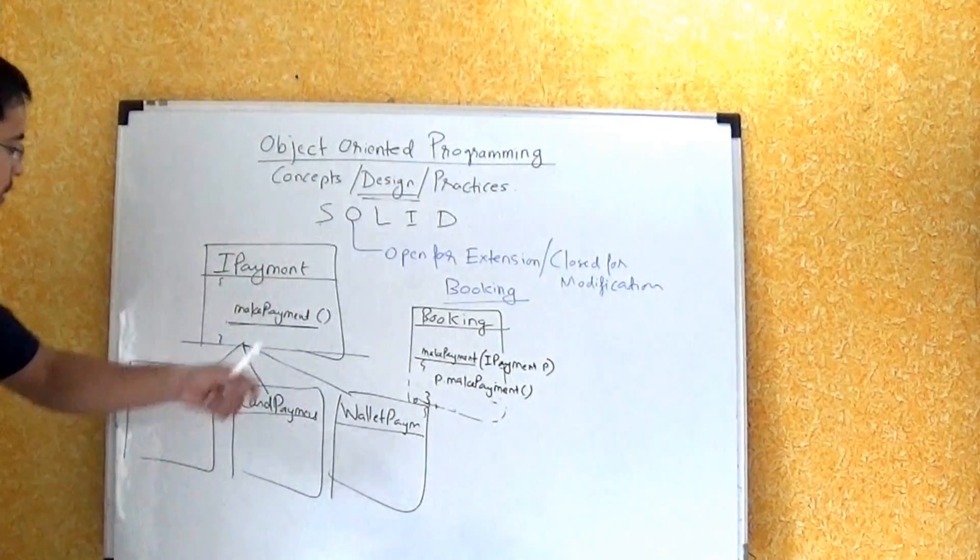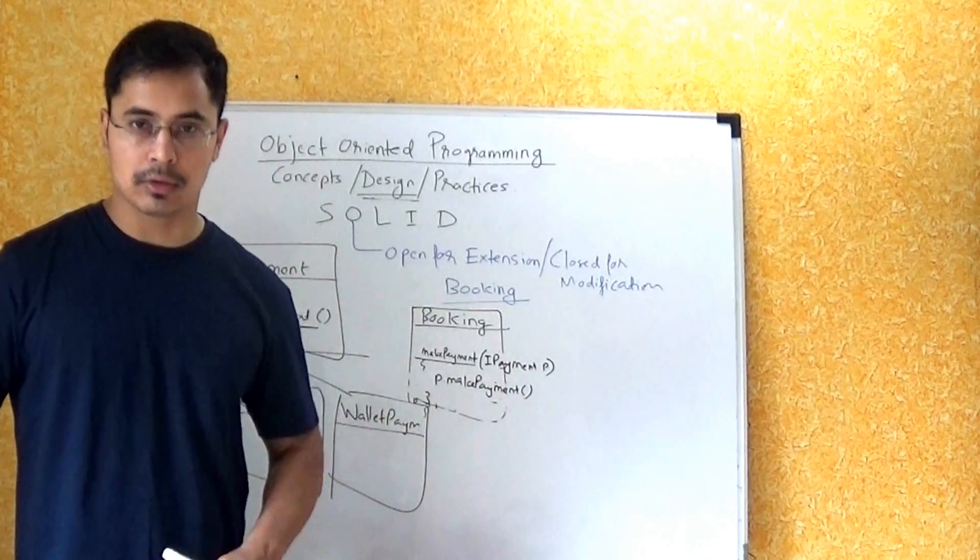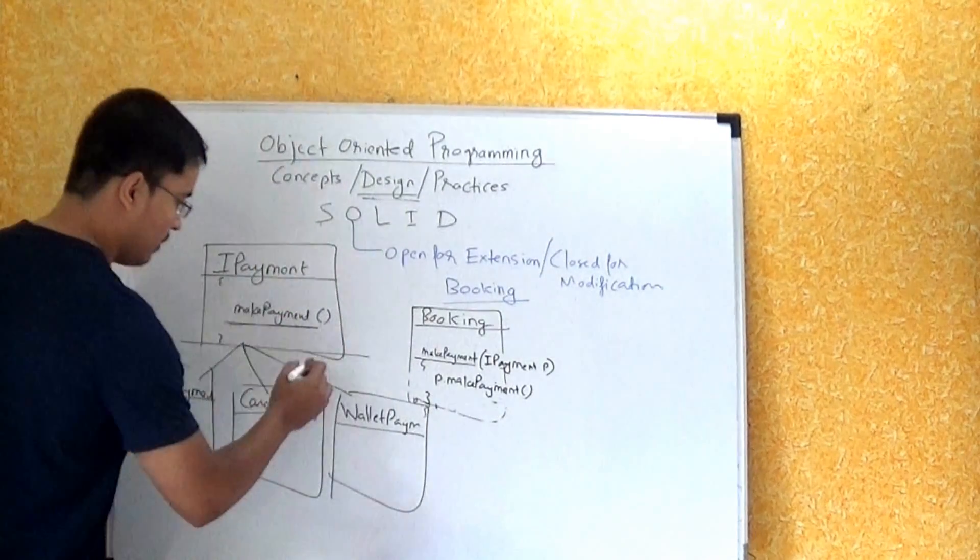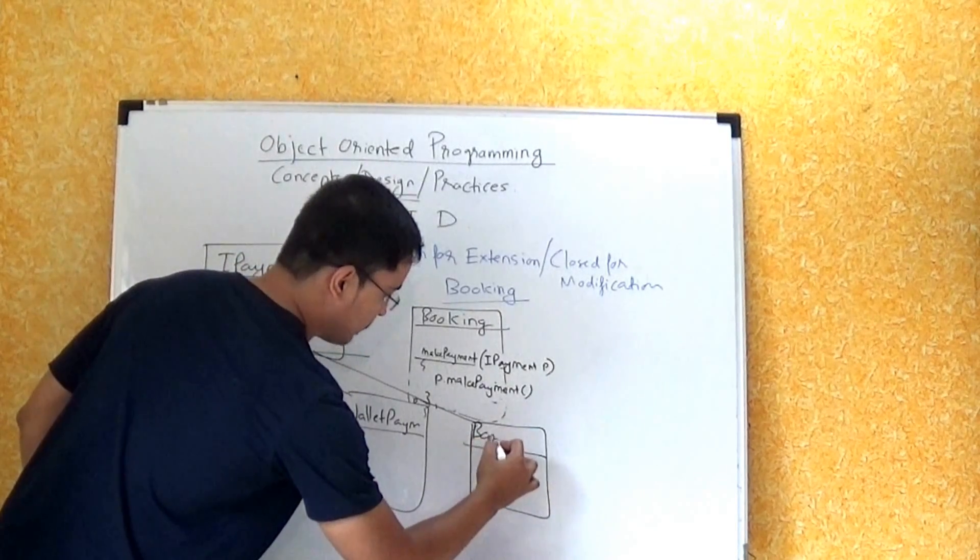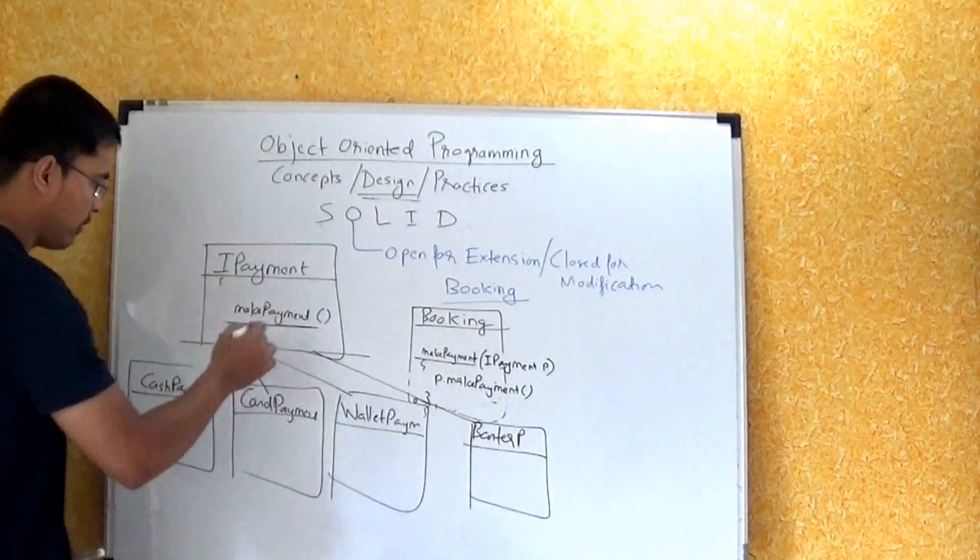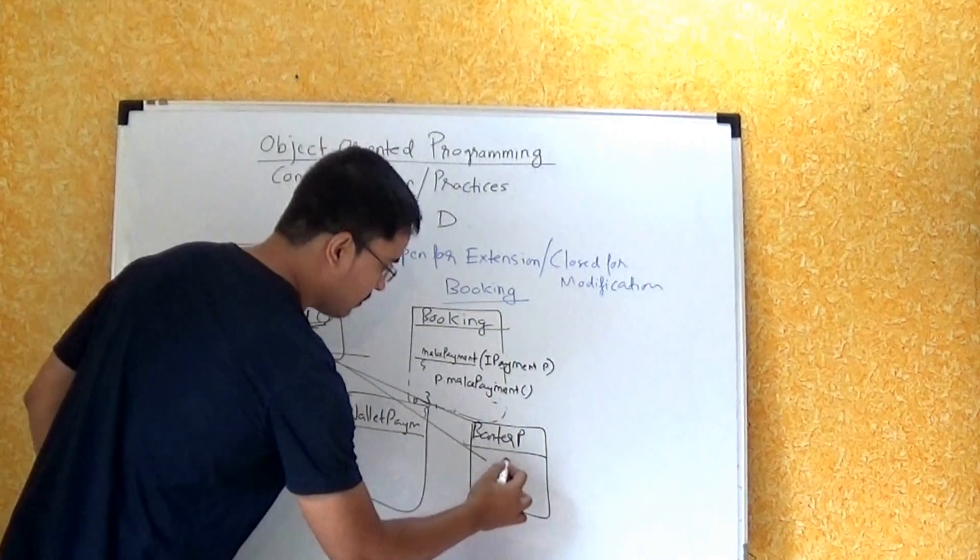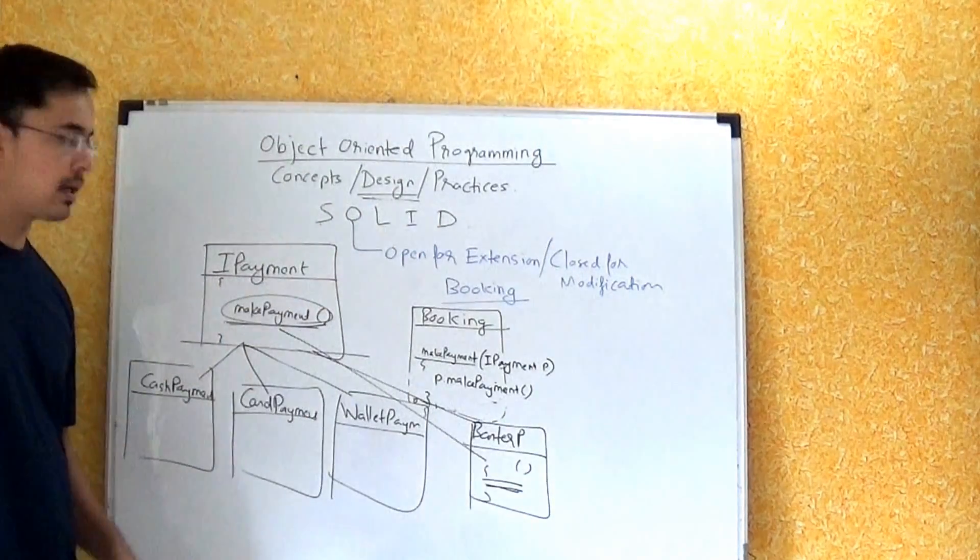So advantage with this approach: let's say tomorrow there is a new way of payment that we want to introduce, BarterPayment. We will just write one more class, BarterPayment, and it will implement this method in some other manner, another way, and we should be able to get it functional